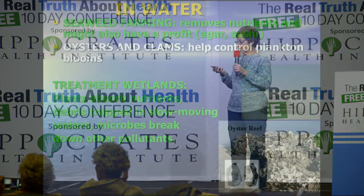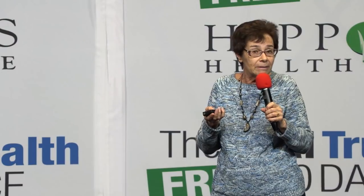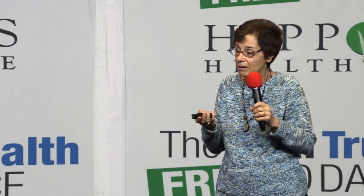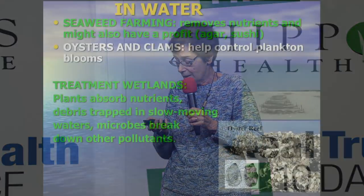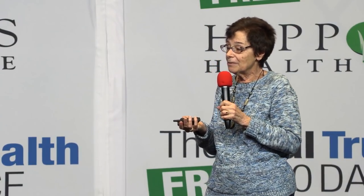Even in the water, it's possible to do things to reduce eutrophication. You can have seaweed farms - they have some in Long Island Sound off Connecticut. The seaweed will absorb the nutrients, and then you can harvest it and use it in sushi or other things. Also, growing oysters and clams won't absorb nutrients, but they will eat some of the plankton that are blooming and reduce the size of a plankton bloom. There are also treatment wetlands with plants to absorb the nutrients. Even once you're in the water, it's not too late - it's possible to do something to reduce eutrophication.